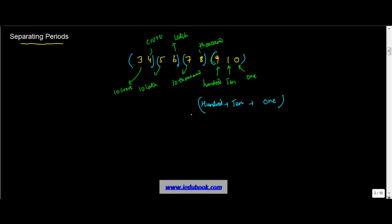Thousand and ten thousand form another period known as thousands. One lakh and ten lakhs form another period known as lakhs. One crore and ten crores form another period known as crores. You add a comma after each of these periods.